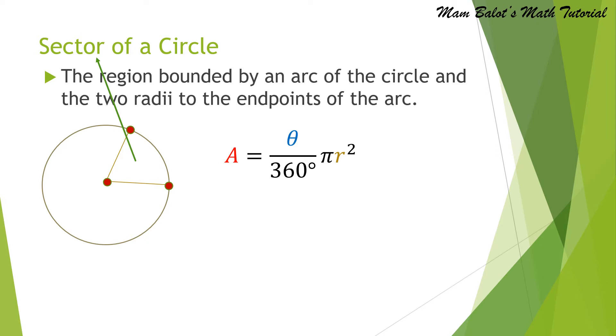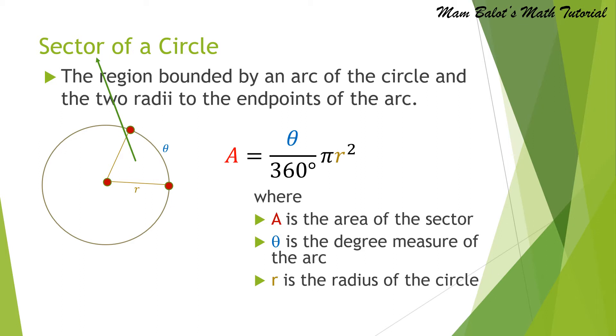In this formula, A is the area of the sector, theta is the degree measure of the arc, and R is the radius of the circle.